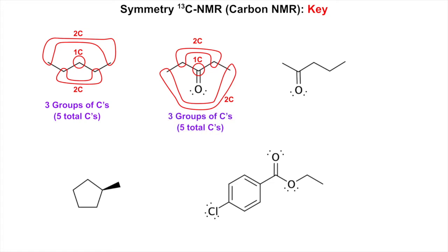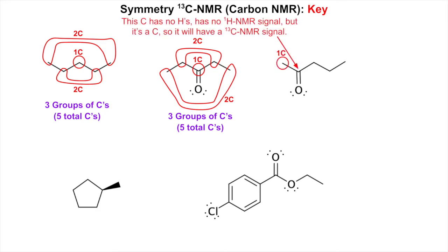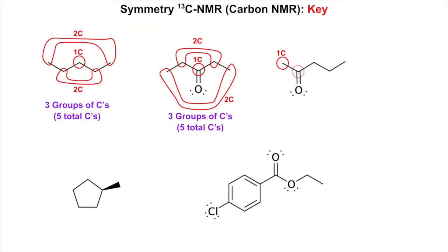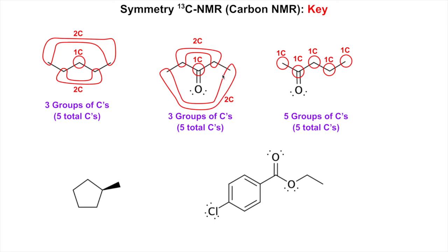This next molecule also has a carbonyl carbon with no hydrogens, but it still gives a carbon NMR signal — that's a one-carbon signal. Then we have a two-carbon signal, and more signals going out. The two outer carbons are not equivalent because one is further from the ketone than the other. So this molecule has five groups of carbons and five total carbons. Notice how the symmetric molecule gives fewer groups due to overlap, while the asymmetric one gives as many groups as there are carbons.